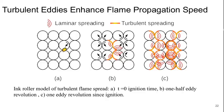Welcome to Part 4 of Lecture 5 of Aerospace Propulsion. The answer is that turbulent eddies essentially enhance the flame propagation speed, or the effective flame propagation speed.